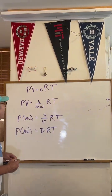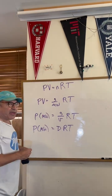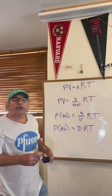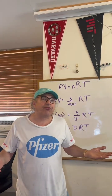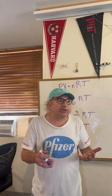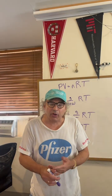I want you to look at the blackboard. You wrote PV equals nRT. Now, for solutions, what's the formula for density? Density is mass over volume.